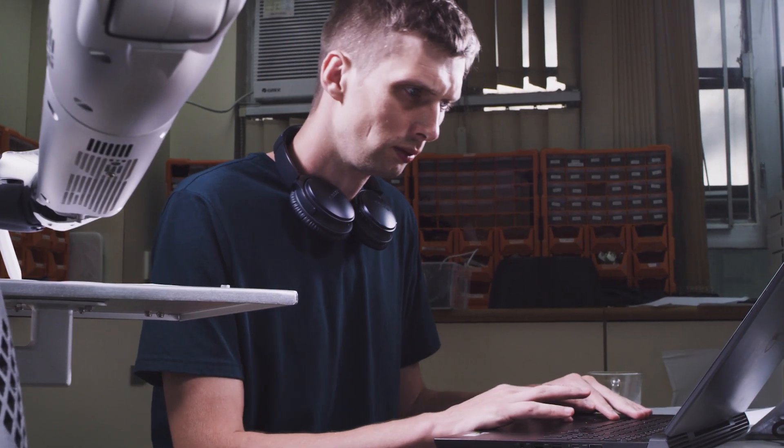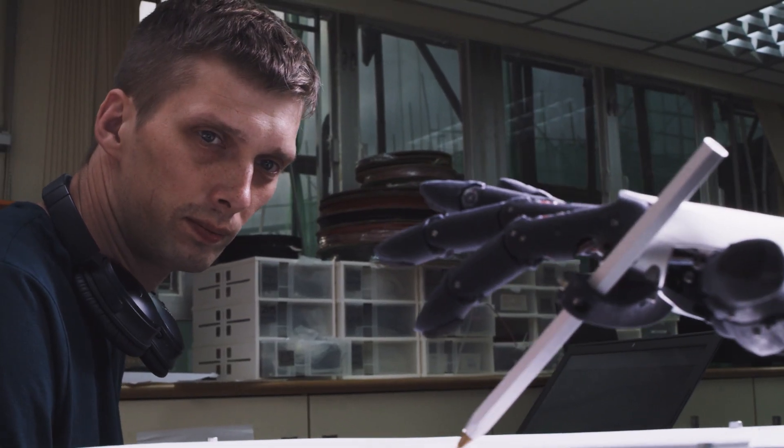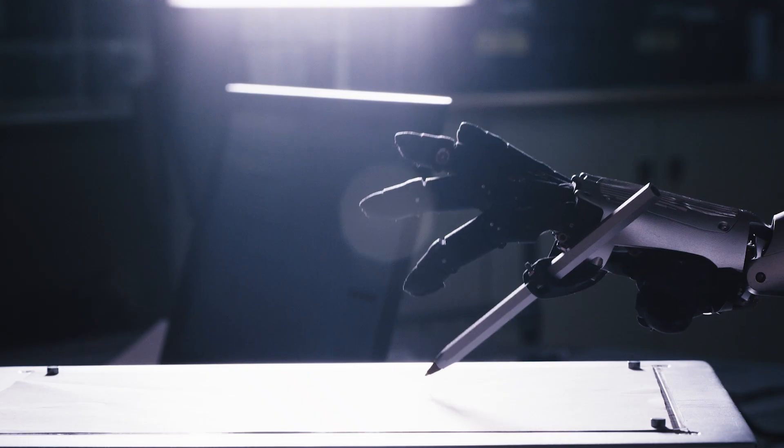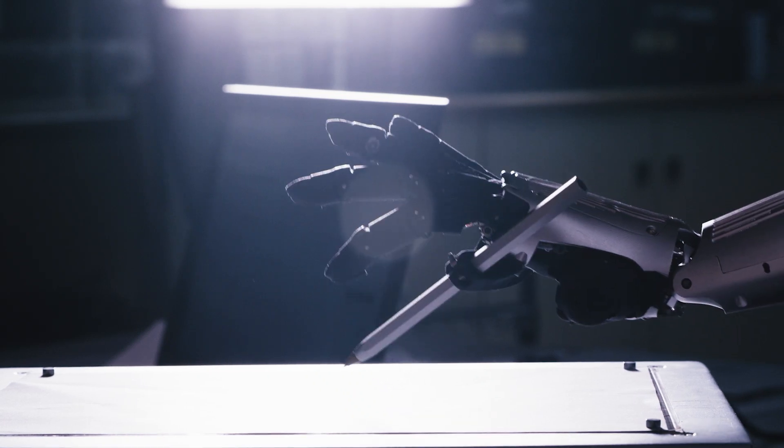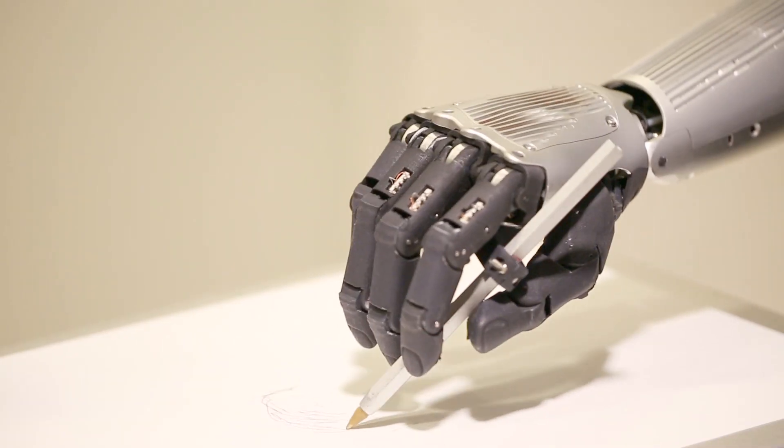Though there are many robots who know how to draw, Sophia's achievement is unique in that she was able to learn using her general purpose, small human-like arms. Not only can she draw, she does it in style.